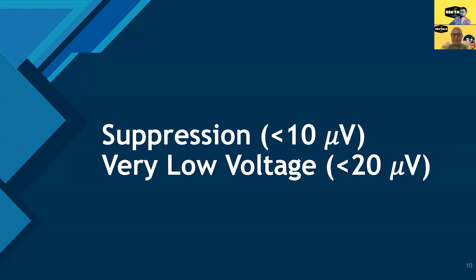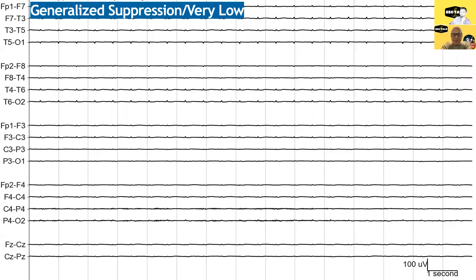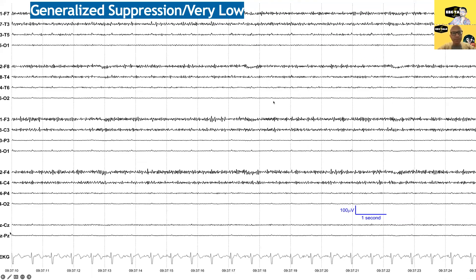Getting flatter now — this is suppression, or looking at it purely by amplitude, it's very low voltage, being less than 20 microvolts. These two terminologies begin to clash, but we should go with the suppression term — so this is generalized suppression, and it's also very low voltage. You can see the ECG artifact here, and when it's very low voltage, the ECG artifact looks really small.